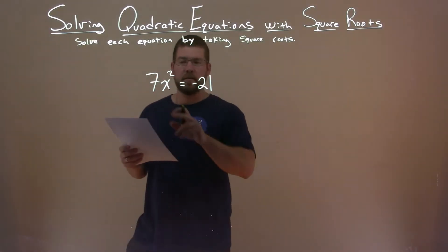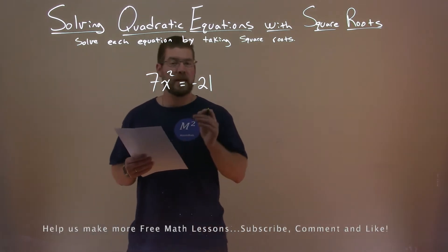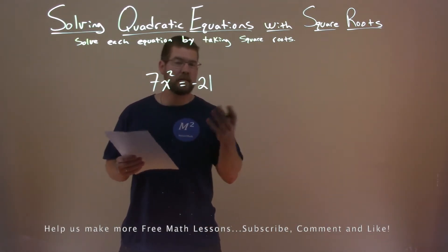We're given our problem right here. 7x squared equals negative 21, and we want to solve this equation by taking the square root.